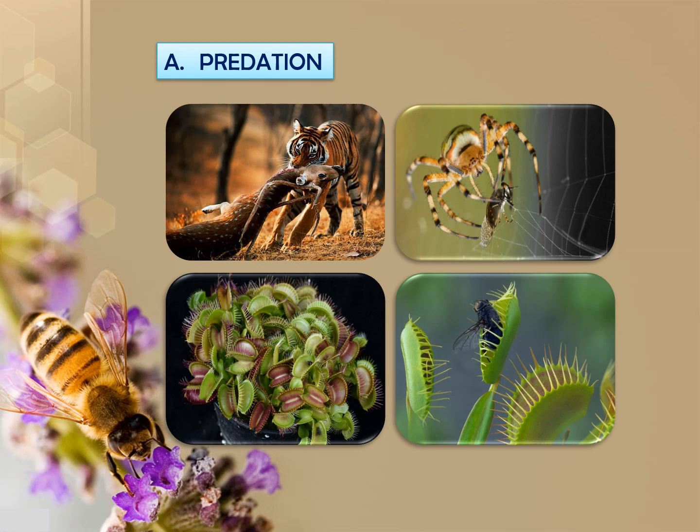Predation means one taxon hunts another taxon. You can observe this in plant and animal interactions as well — both carnivorous plants and interactions ranging from megafauna to microfauna.